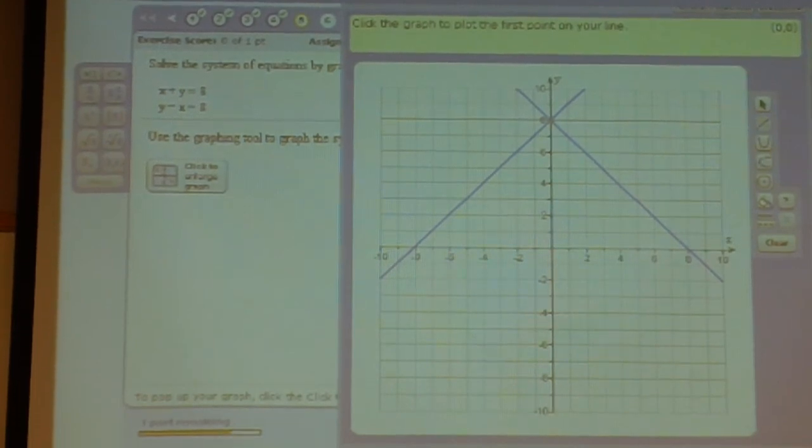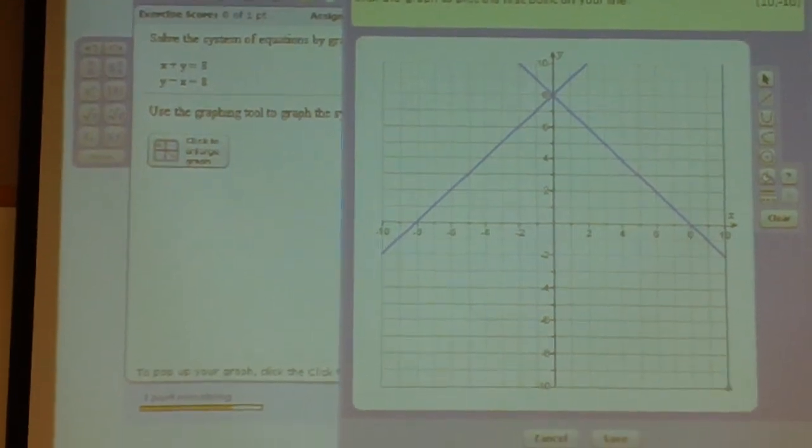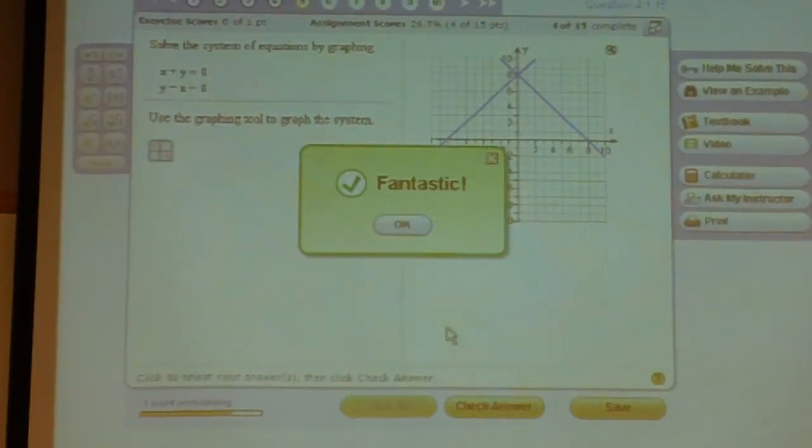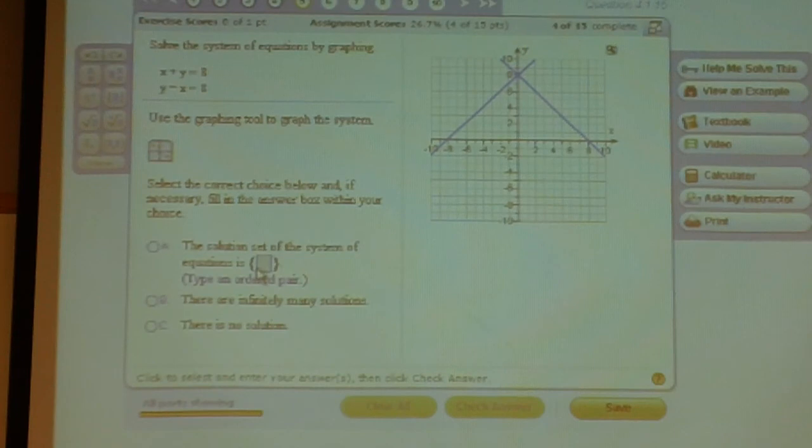So we'll click save. Check answer. And then we'll type our ordered pair. Parentheses, 0 comma 8, close parentheses.